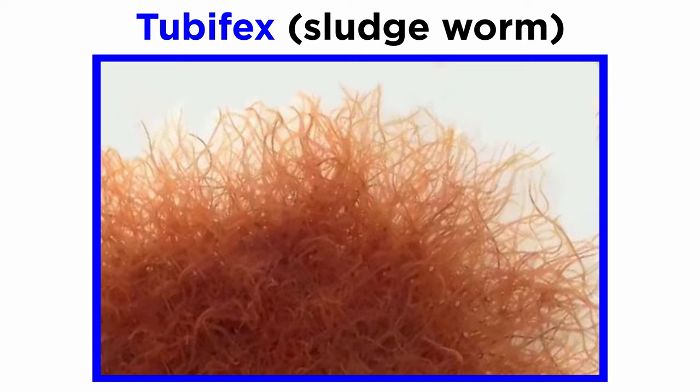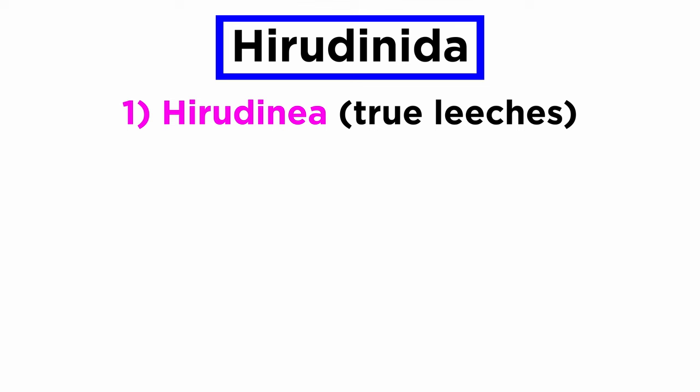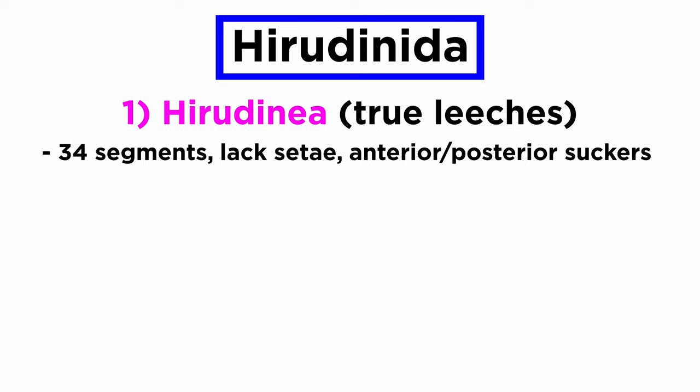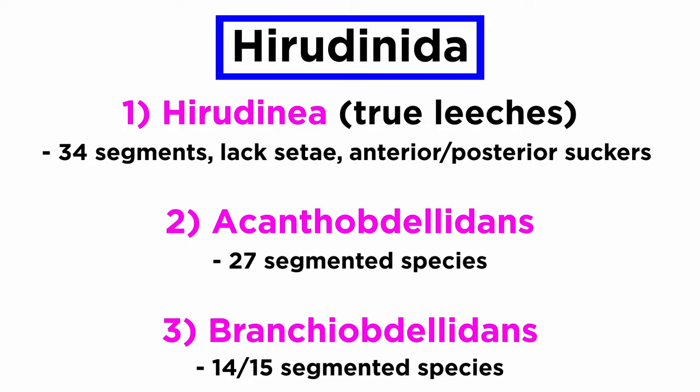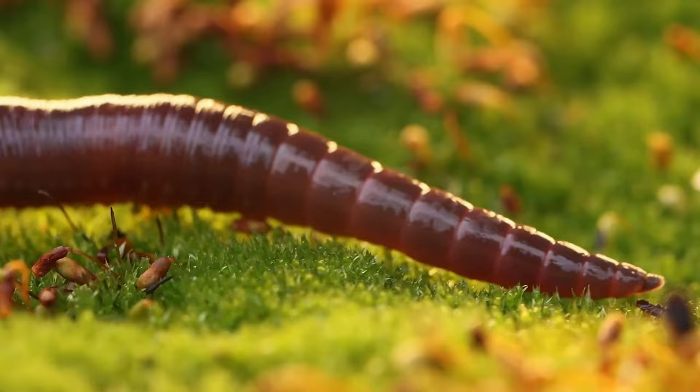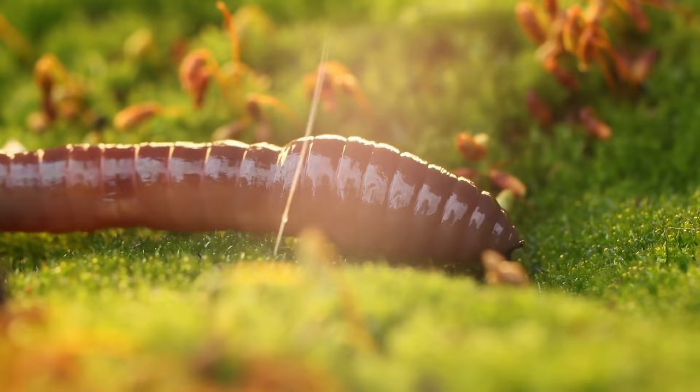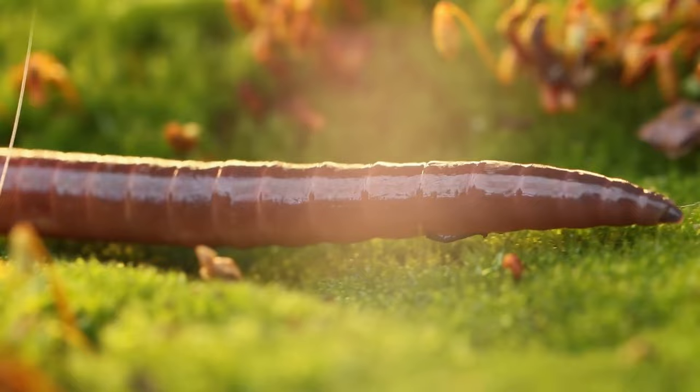Hirudinida is split into three orders: the true leeches of Hirudinea, all of which have 34 segments, lack setae, and possess anterior and posterior suckers; the 27-segmented acanthobdellids; and the 14 or 15-segmented branchiobdellids. There are over 8,000 species of segmented clitellates, making them an incredibly successful clade, though earthworms dominate in terms of biomass and species diversity.